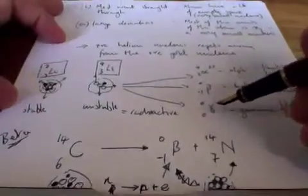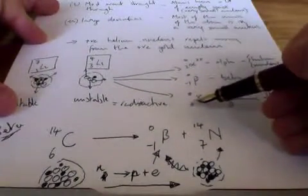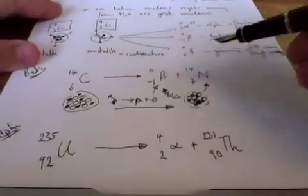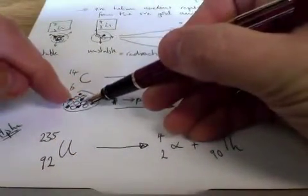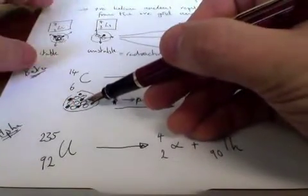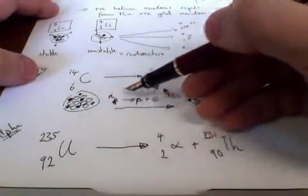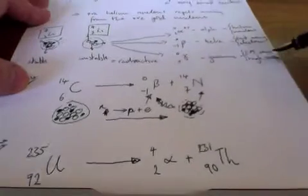Interestingly what happens with the gamma decay is that all you do is, because I've got no change of protons and neutrons, I just get a rearrangement. These will move around a bit and as they move around and reposition themselves the energy change fires out an electromagnetic wave so no change happens at all.